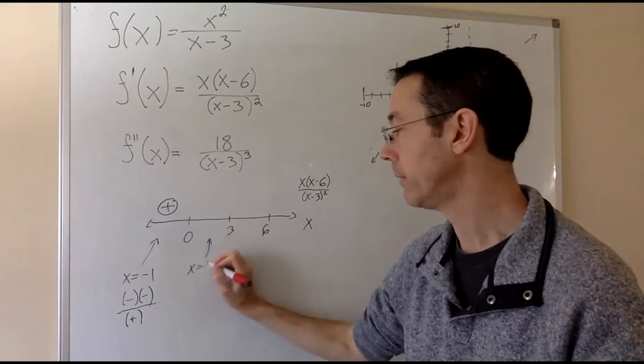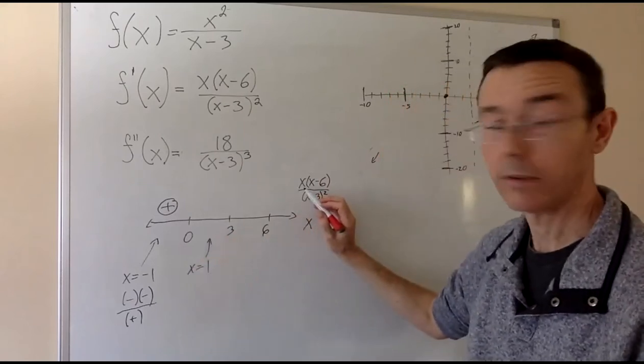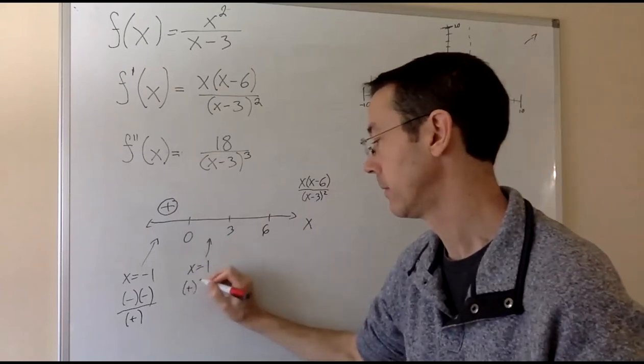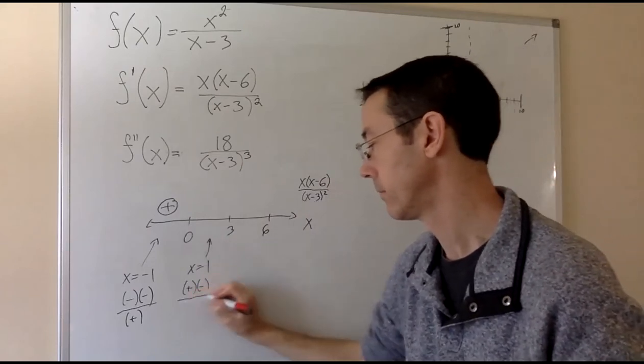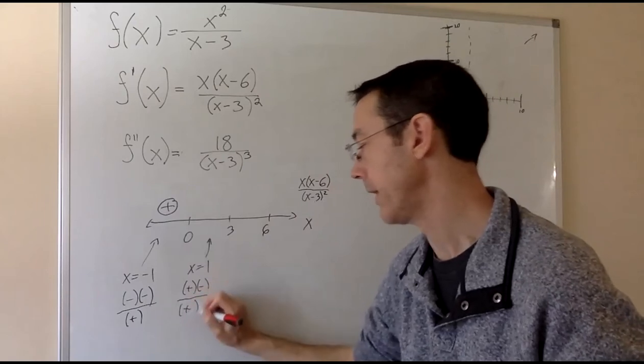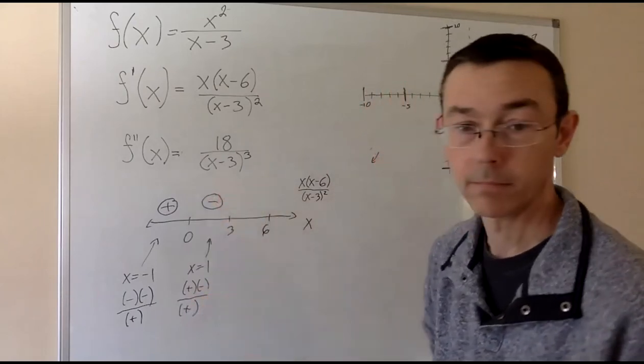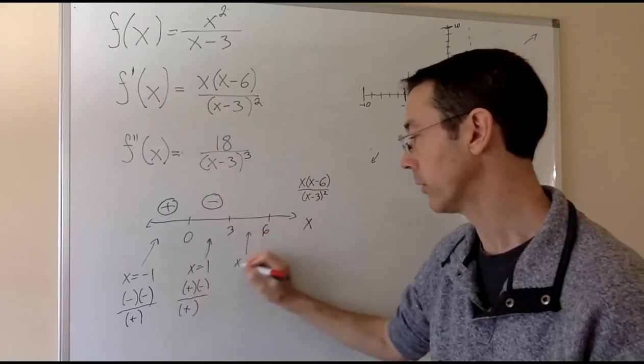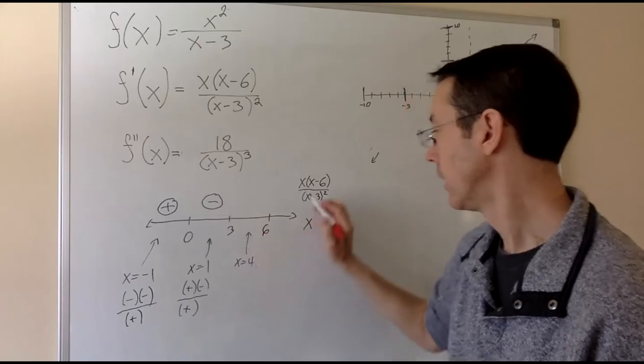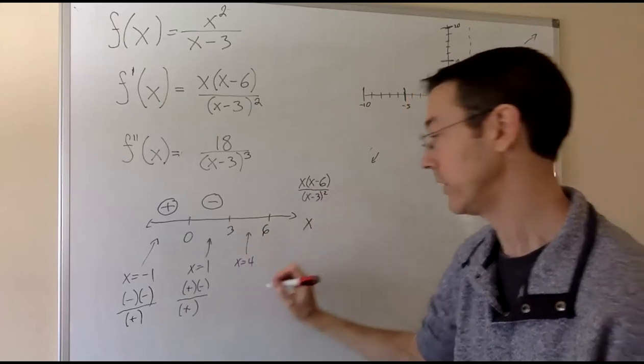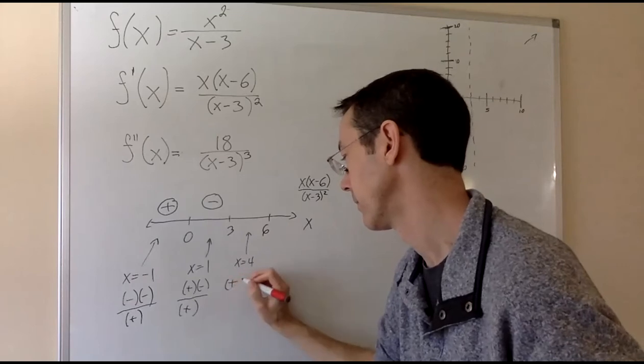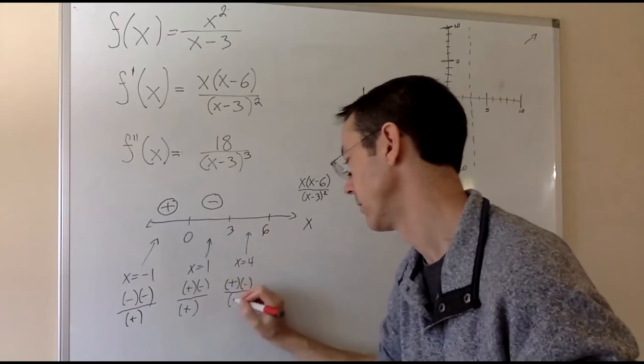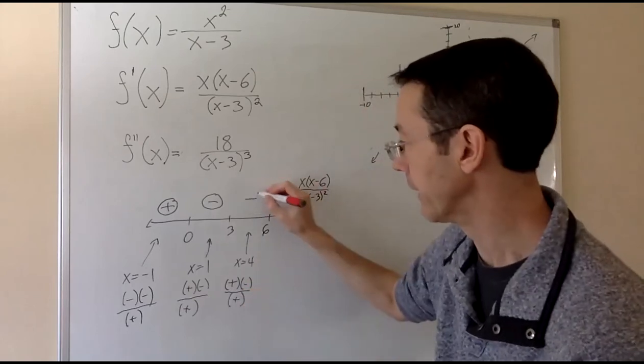At x equals 1, now it's a positive times a negative over a positive. And that's going to be negative. Moving on, x equals 4. Positive, negative, positive. So I get a negative again.